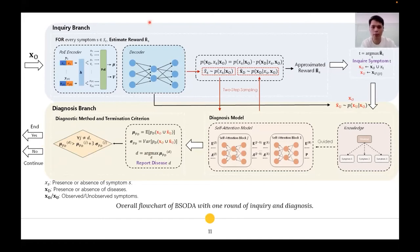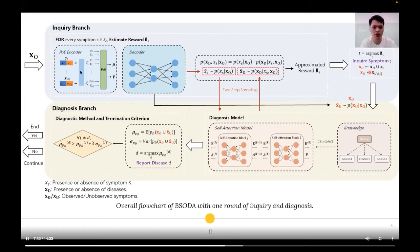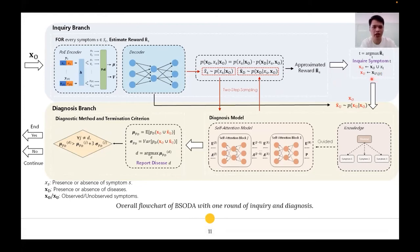Let's go over the workflow. At first, observed features X_O are fed into the inquiry branch. For every possible symptom X, the inquiry branch estimates the reward R_S, which applies a two-step sampling strategy. Next, the inquiry branch decides to inquire the symptom with the maximum reward and updates observed features X_O and unobserved features X_U. After that, we impute X_U by VAE and feed it into the diagnosis model to make predictions. Finally, the termination criterion determines whether to continue inquiring symptoms.